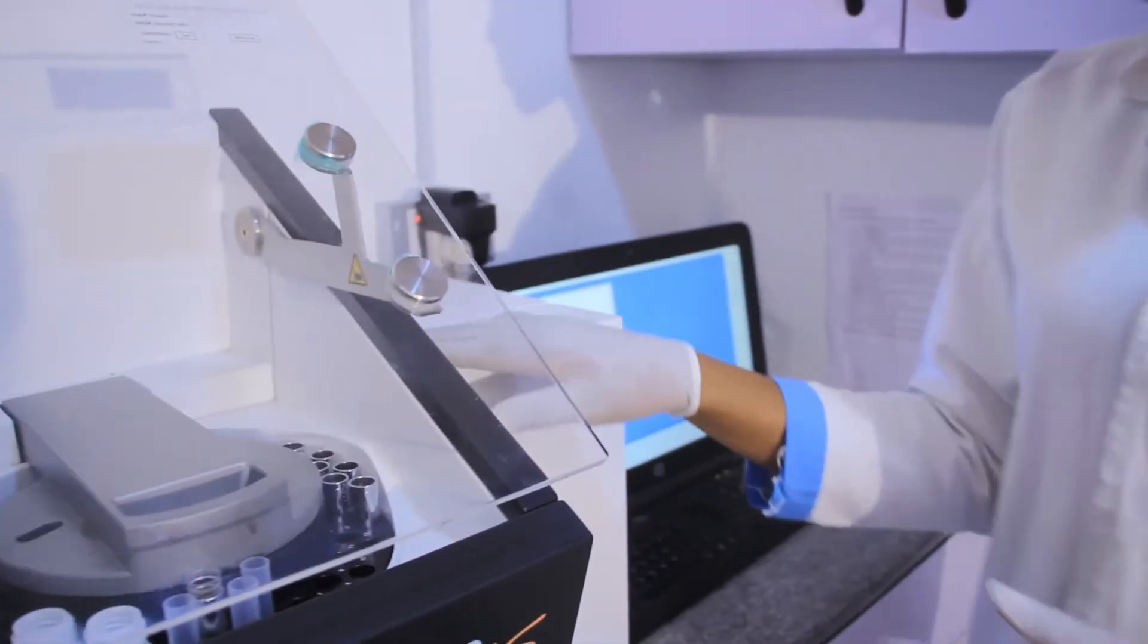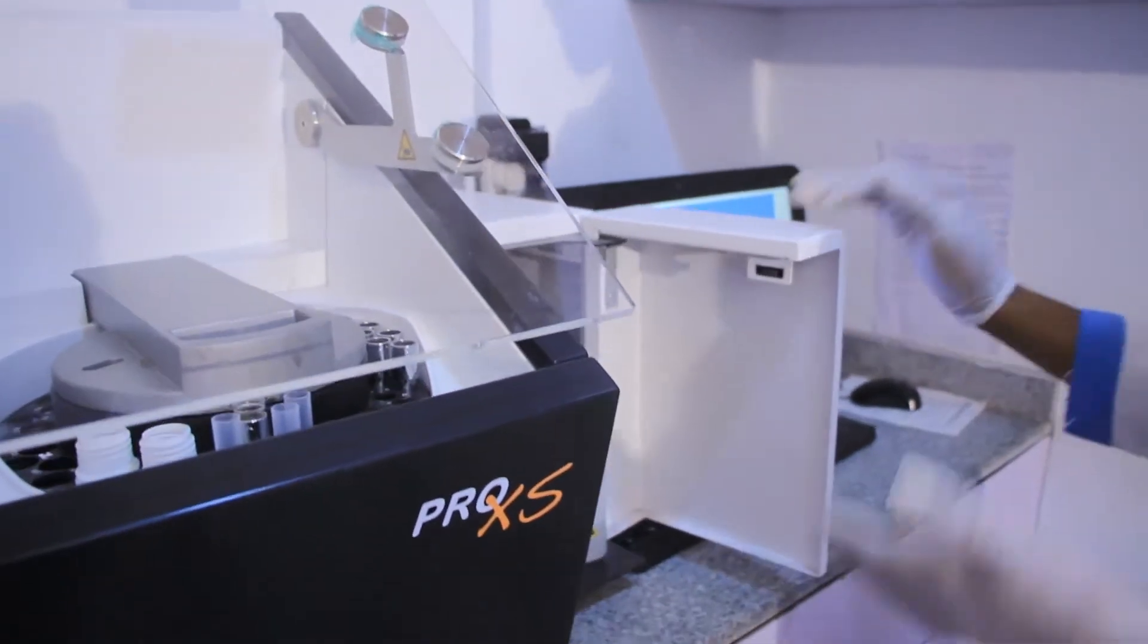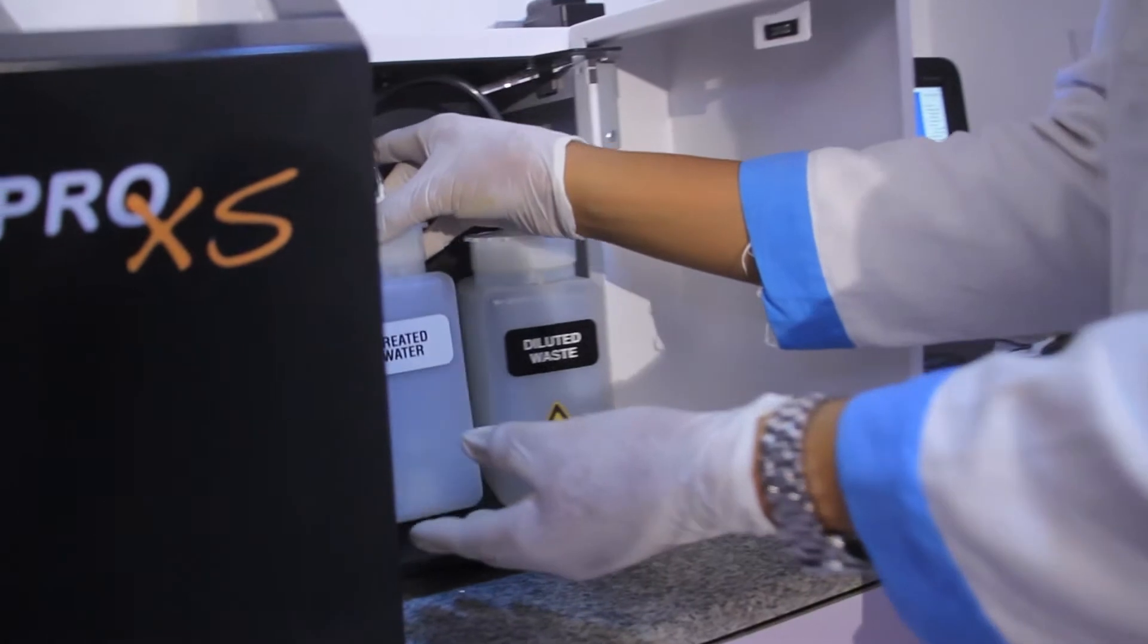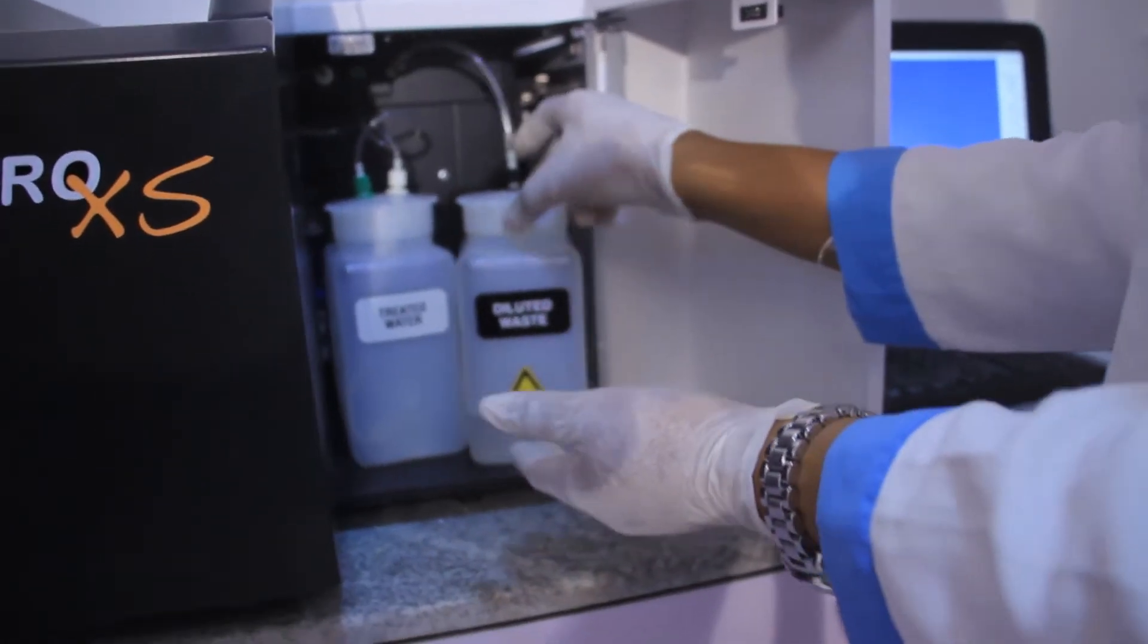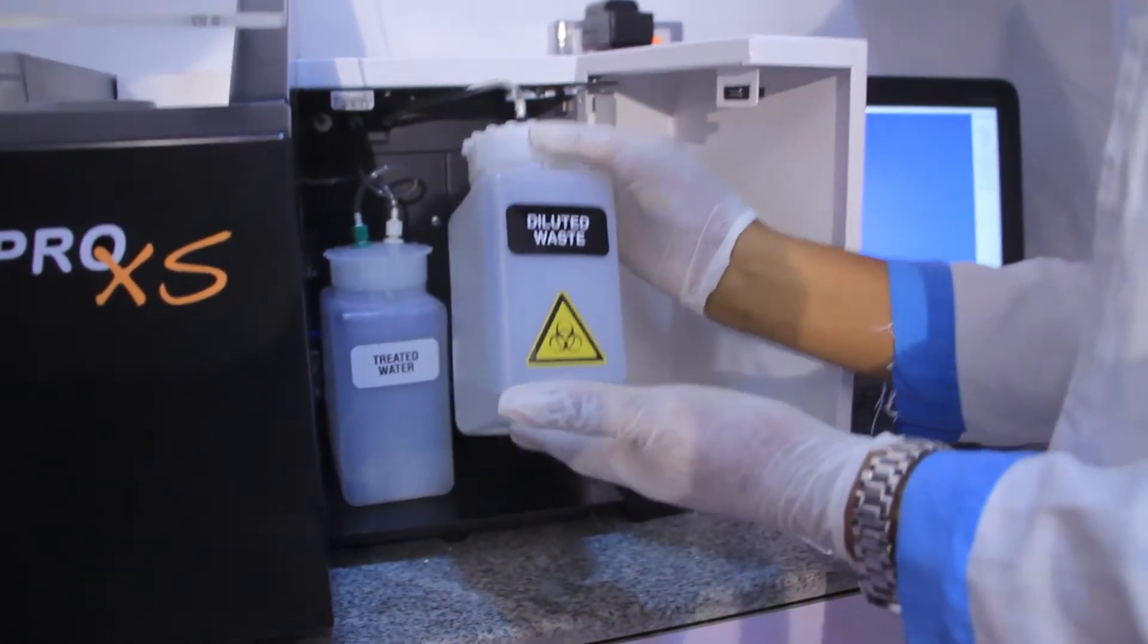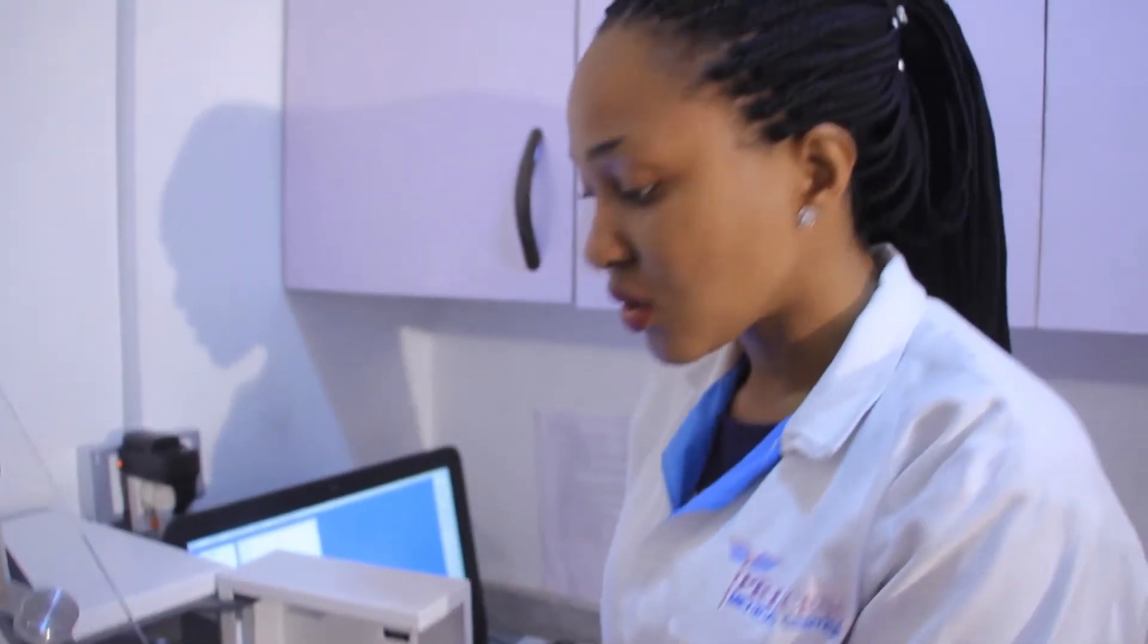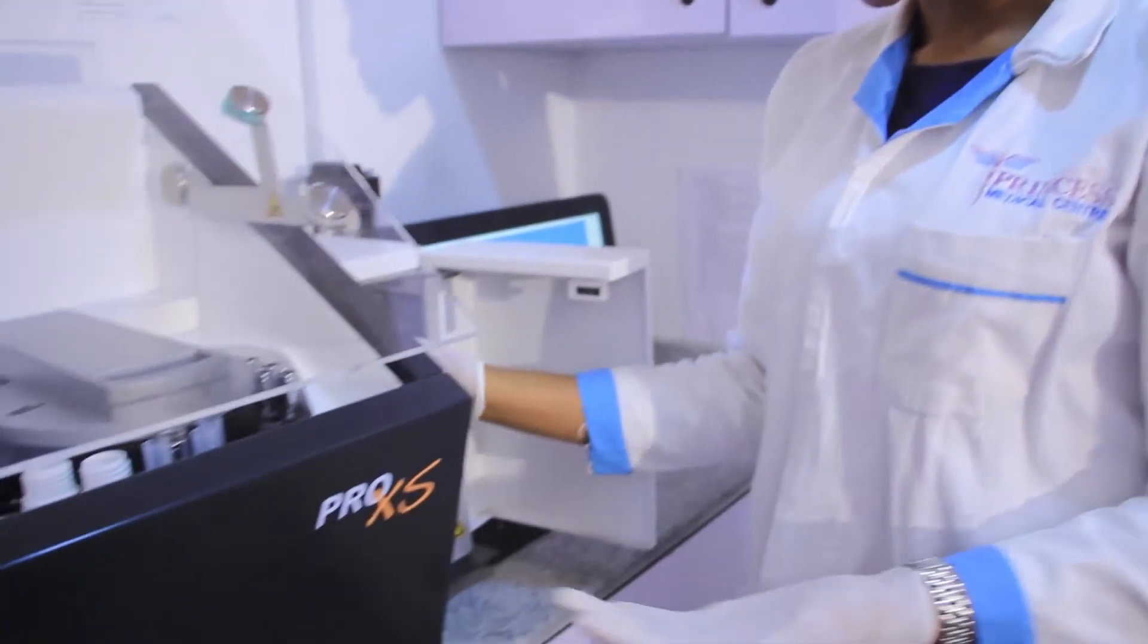Over here on my right, we have the water compartment. The water compartment is made up of the treated water and the diluted waste. The diluted waste is where the analyzer deposits its waste, while the treated water is where the analyzer picks up treated water and runs the samples.